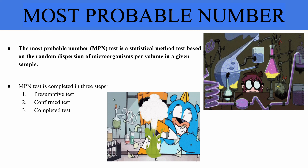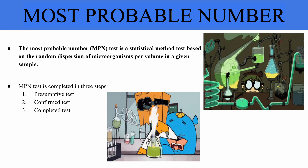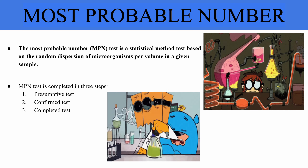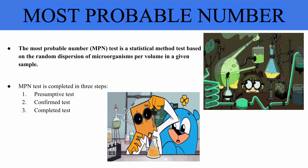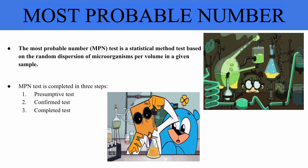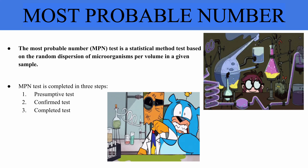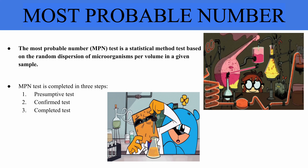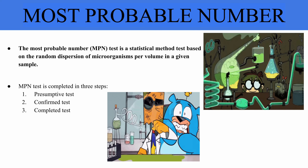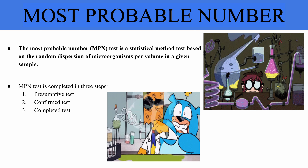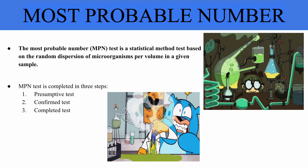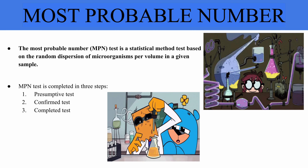The MPN of the indicator organism is estimated using statistical tables based on the distribution of positive and negative reactions. The MPN test consists of three steps: the first is the presumptive test, the second is the confirmed test, and the third is the completed test. In the presumptive test, measured amounts of water are added to fermentation tubes with MacConkey lactose broth and Durham tubes to detect gas production.